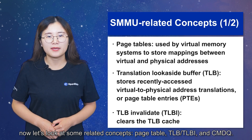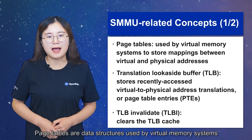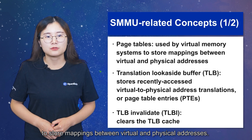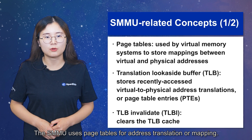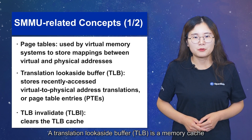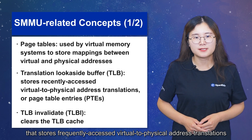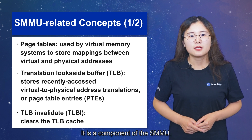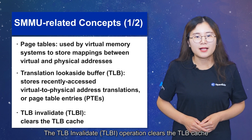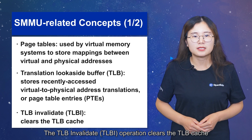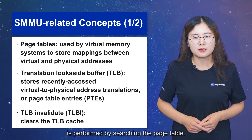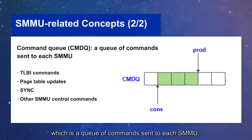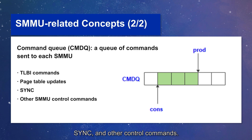Now let's look at some related concepts: page table, TLB, TLBI, and Command-Q. Page tables are data structures used by virtual memory systems to store mappings between virtual and physical addresses. The SMMU uses page tables for address translation or mapping. A translation look-aside buffer, or TLB, is a memory cache that stores frequently accessed virtual-to-physical address translations, or page table entries. It is a component of the SMMU. The TLBI operation clears the TLB cache and ensures that the next virtual-to-physical address translation is performed by searching the page table. The next concept is Command-Q, which is the queue of commands sent to each SMMU, including TLBI commands, page table updates, sync, and other control commands.